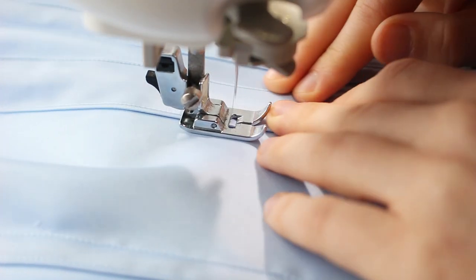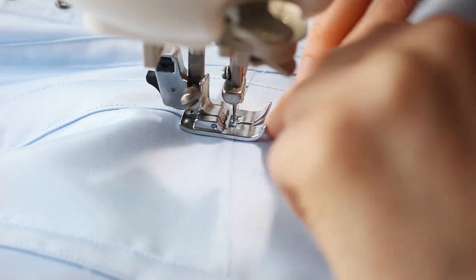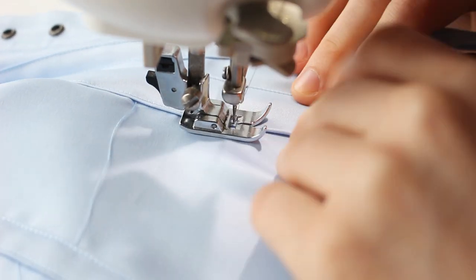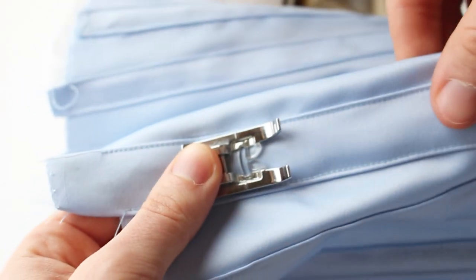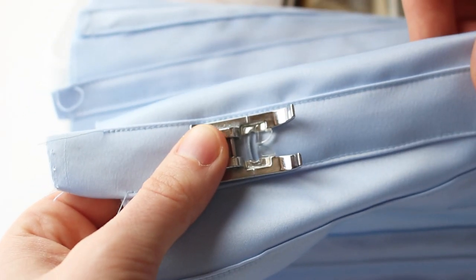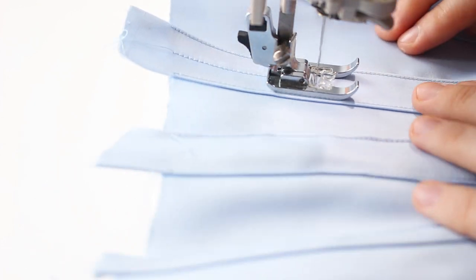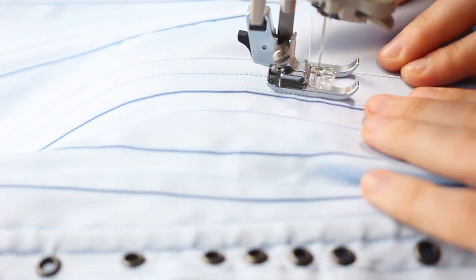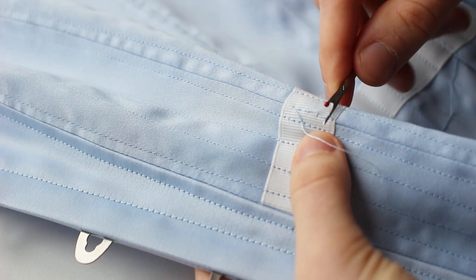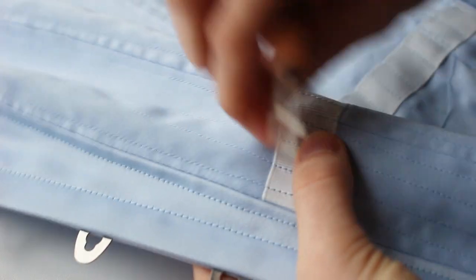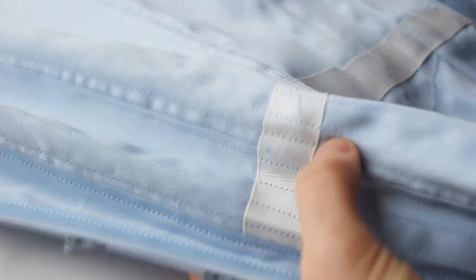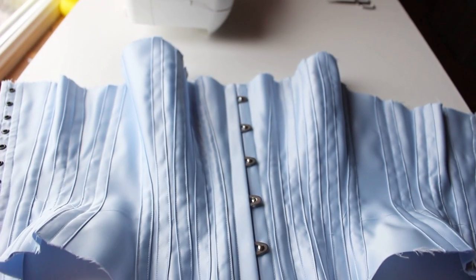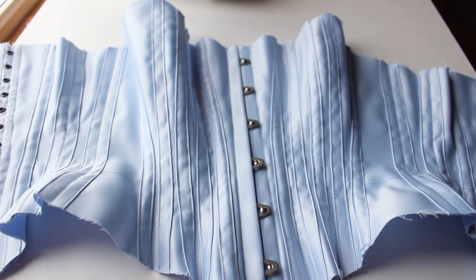Again I stitched close to the edge of the tape. After that I changed my foot to the monogramming foot. No, I wasn't about to make monograms on my corset. But this foot is exactly the same size as the channel, so I just have to stitch the center to get 2 boning channels. After all of the channels were stitched to the corset, I removed the basting stitches on the waist tape, since it was secured in place. You can see how the corset already took some shape, even without the bones.